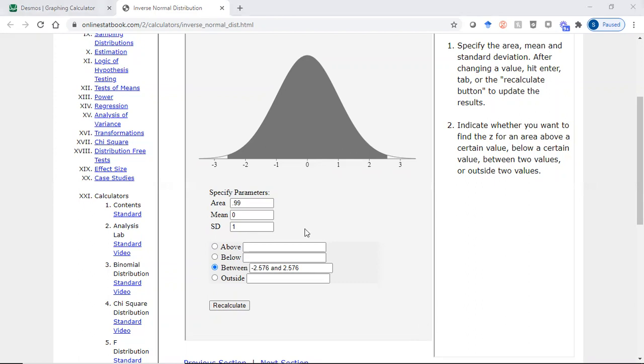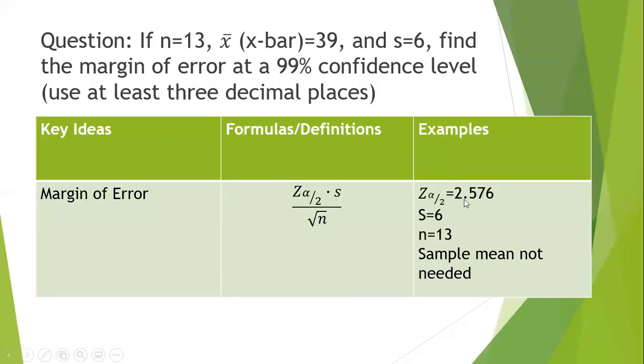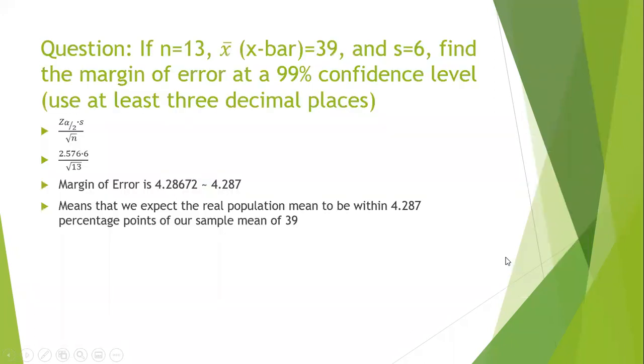And now we'll go back to our problem. So we found our z alpha over two, our s is six, our sample size is 13, and the sample mean is not needed for this calculation. So we'll set up our formula. Here's the z alpha over two times s over the square root of n. We'll plug in those values. And when you calculate it, and I like to use Desmos.